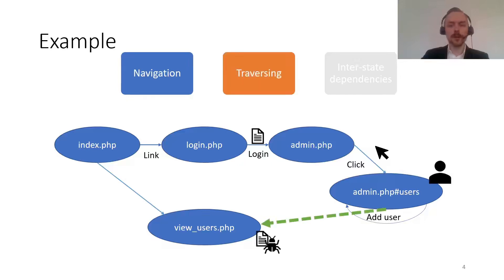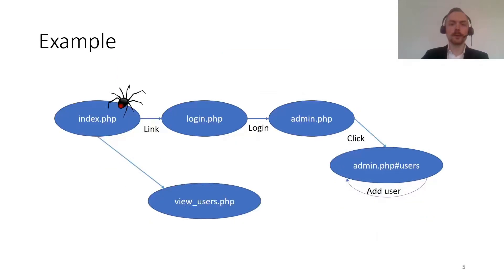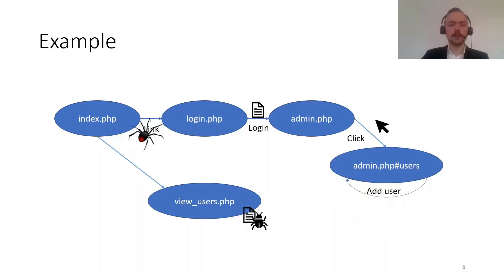We also need to think about how we traverse the application, because where we inject the user might be different from where we can see this user reflected. We might need to go back to the index page and continue crawling until we find the user that we inserted. And then we can infer the interstate dependency between the view user page and the admin page. We want a scanner to be able to do this autonomously — to follow links, submit forms, click on JavaScript events or buttons, add users, and then continue crawling until it finds these inserted values, and also infer interstate dependencies.